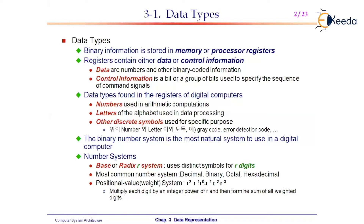There are primarily two locations within the computer system: CPU registers and memory. Before proceeding, let us understand what a register is. As the basic storage element is a flip-flop, a register is a collection of flip-flops.